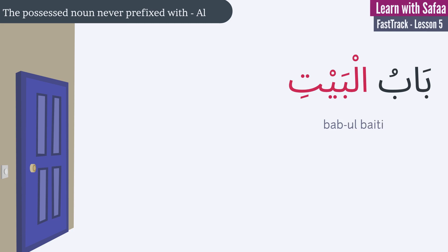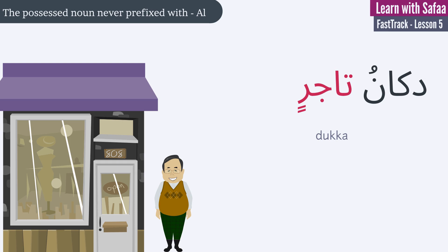Bab-ul-baithi — the door of the house. In this possessive expression, the noun bab is the possessed noun, and al-baithi is the possessor. Let's repeat: bab-ul-baithi — the door of the house. Dukkanu-tajirin — shop's dealer. Let's repeat: dukkanu-tajirin — shop's dealer.